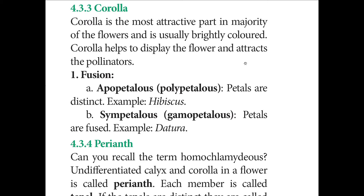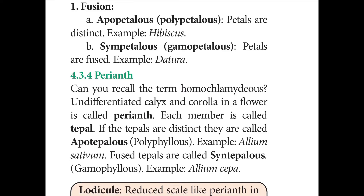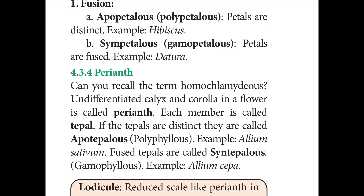Corolla is the most attractive whorl and plays an important role in attracting pollinators. Based on fusion, it is classified into apopetalous or polypetalous (petals free and distinct — example: Hibiscus) and sympetalous or gamopetalous (petals fused — example: Datura). Perianth is the term used for homochlamydeous flowers where calyx and corolla are not differentiated. The members of the perianth are called tepals. If tepals are distinct, it is apopetalous; if fused, syntepalous.